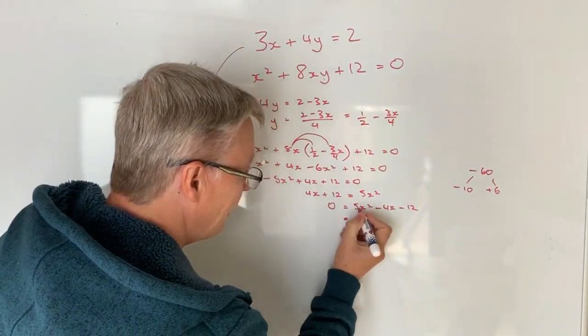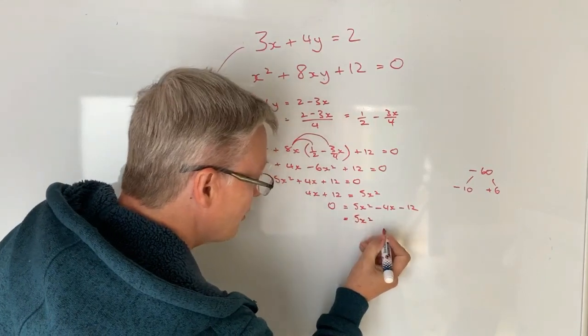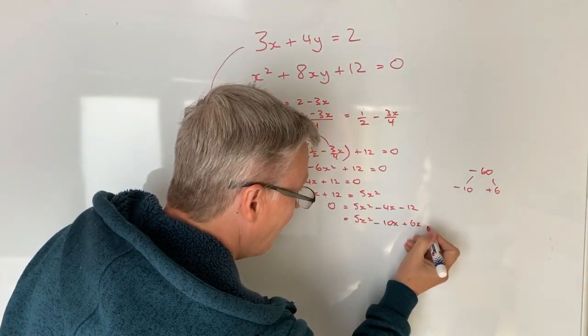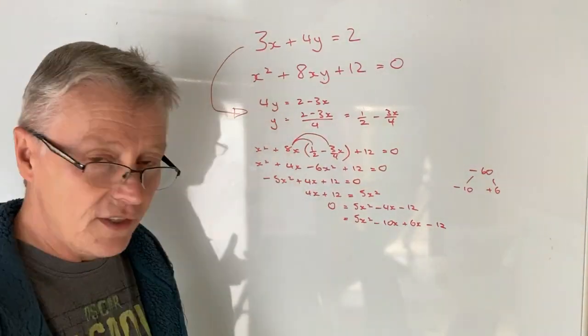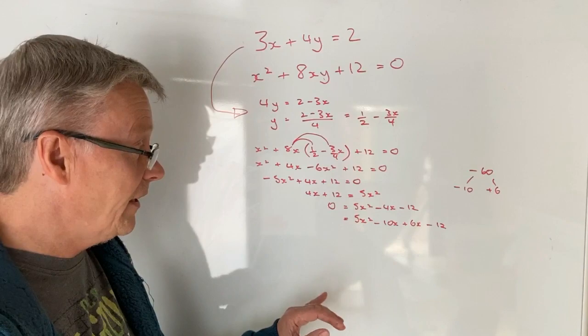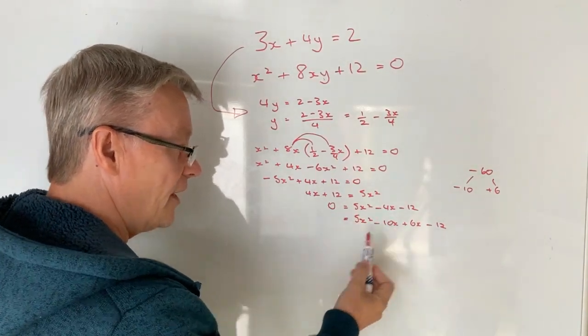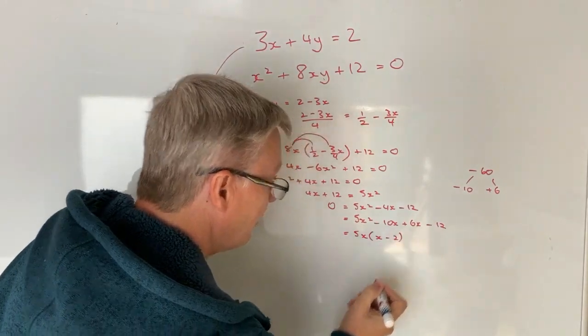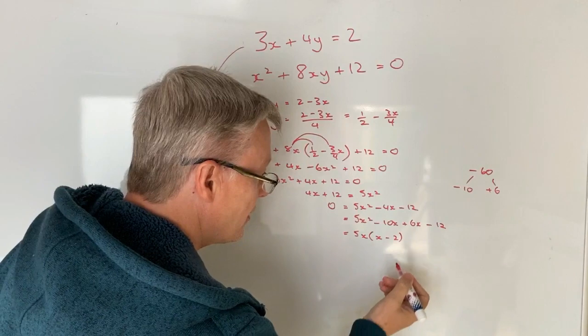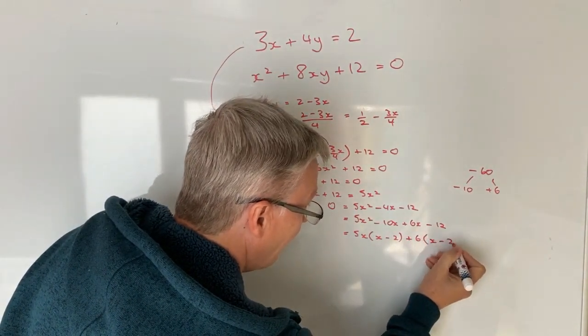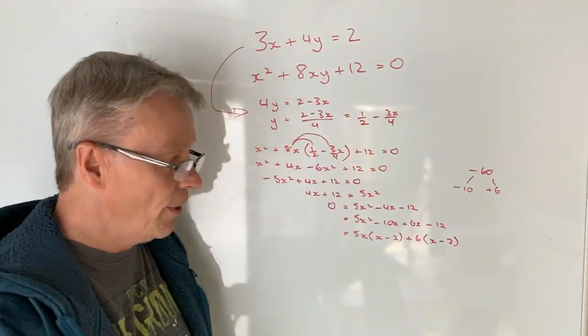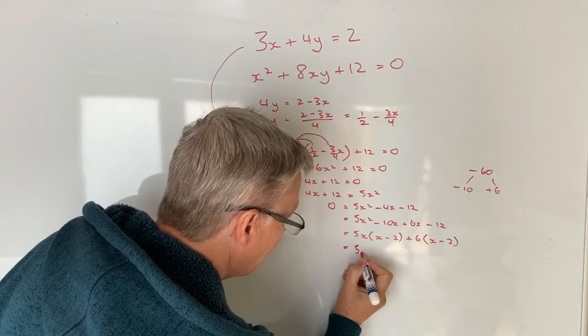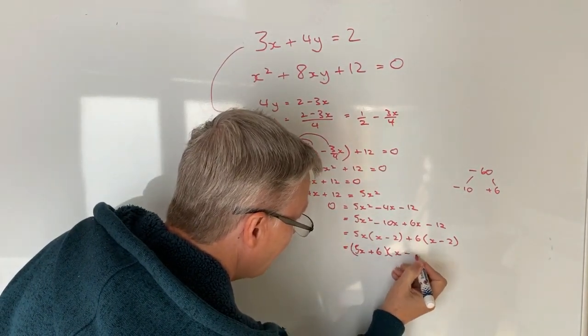And then it's a case of rewriting this equation like this. So 5x squared and rather than writing minus 4x I'm going to write minus 10x plus 6x minus 12. Now you'll see that minus 10x and plus 6x is minus 4x so that's fine. But it gives me the ability now to factorize the first two terms and what I'm going to do is factorize those for 5x and I get x minus 2. If I factorize this second two terms for 6 guess what I get x minus 2. So what I've got now is two common factors and then it's a case of rewriting that together as 5x plus 6 multiplied by x minus 2.